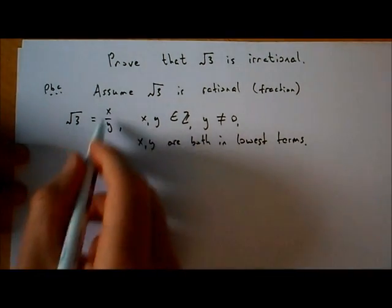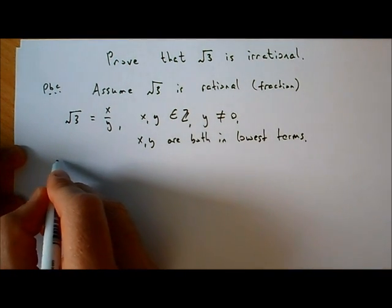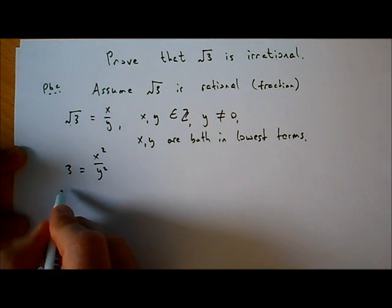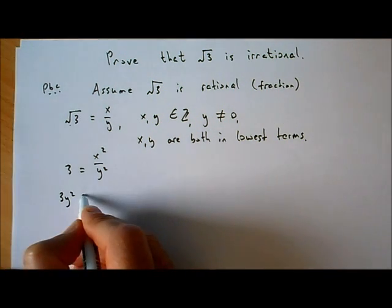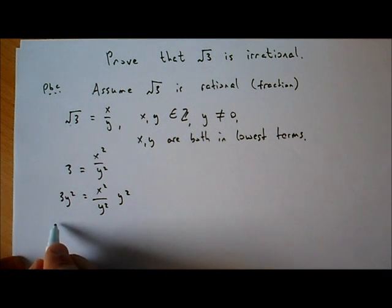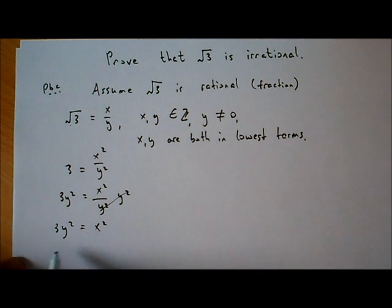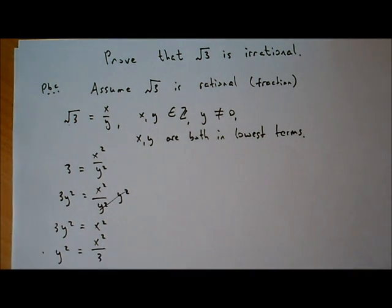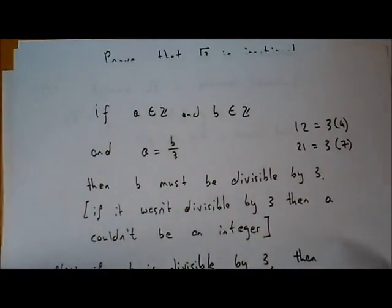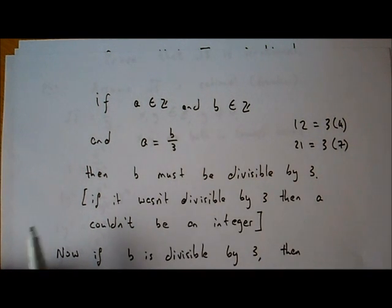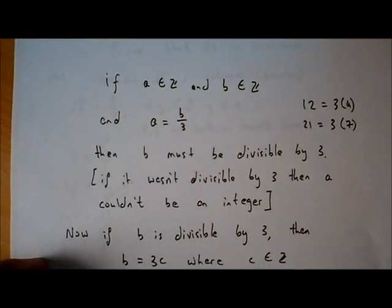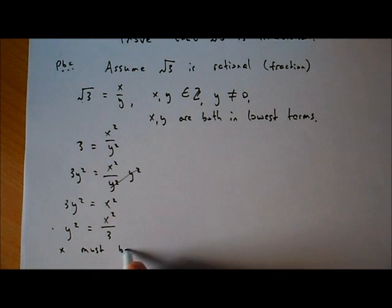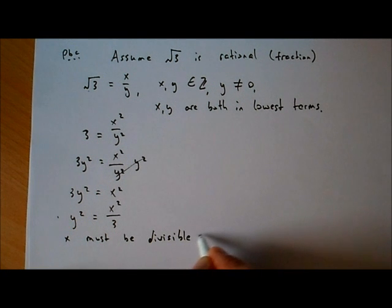So let's find a contradiction. We have root 3 equal to x over y. We can square both sides to get 3 equals x squared over y squared. Multiplying both sides by y squared gives us 3y squared equals x squared. Rearranging, y squared equals x squared over 3. This is the same form as before — if a equals b over 3, then b must be divisible by 3. So x squared must be divisible by 3, which means x must be divisible by 3.